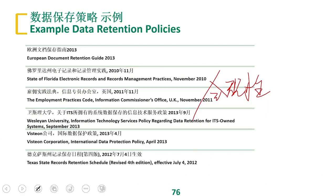Previously there was already the National Secrecy Law. China's data is divided into top secret, confidential, and secret data, representing a considerable layering. Different levels of data have different preservation requirements and preservation cycles — for example, top secret data is required to be kept for 30 years. So different data has different preservation methods and locations.